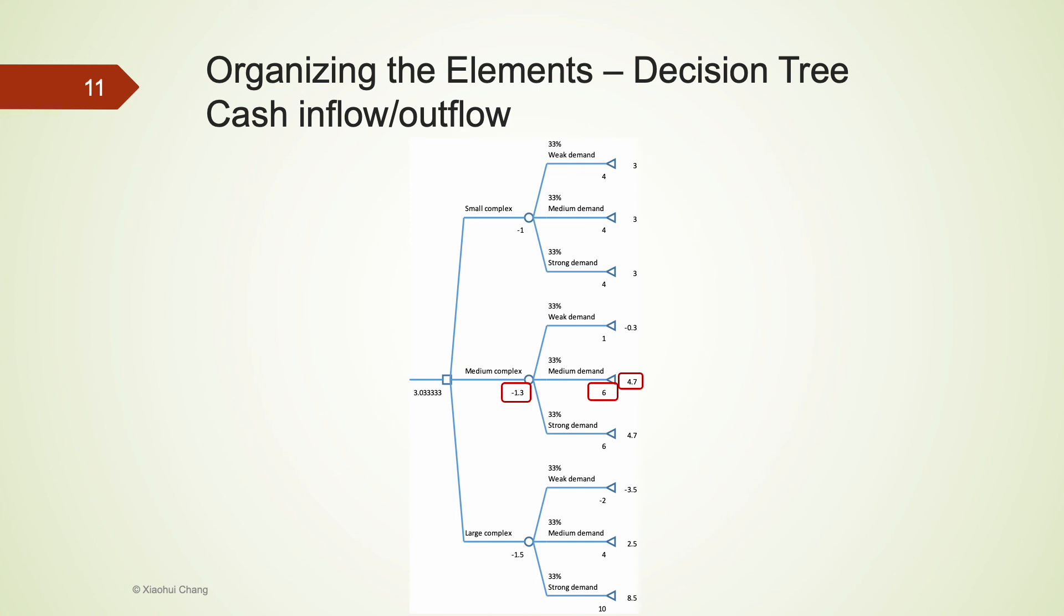If later the demand turns out to be medium, then there is a cash inflow of $6 million. This should be recorded between the chance node and the terminal node. To calculate the final payoff of $4.7 million at the terminal node, we simply add up all the cash inflows and outflows along the way to get the final payoff.